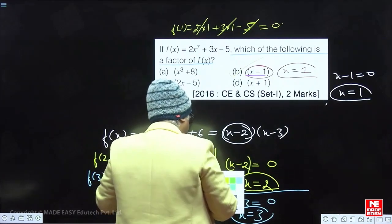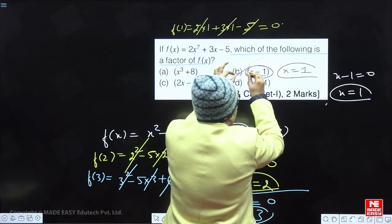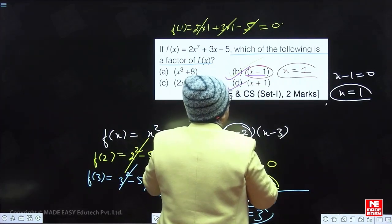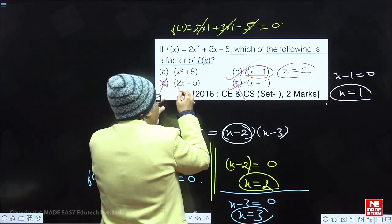Why? You might say, sir, why you are beginning with this? Because this is the easiest of all values. If had it not worked out, I would have tried by x equal to minus 1. Had it not worked out, I would have definitely tried by x is equal to 2.5.